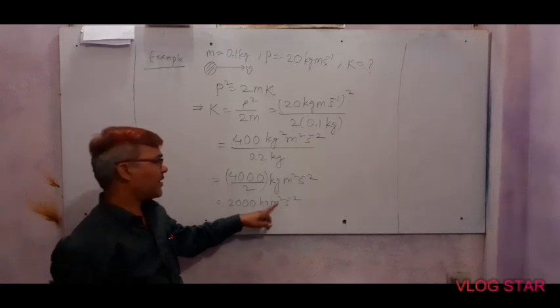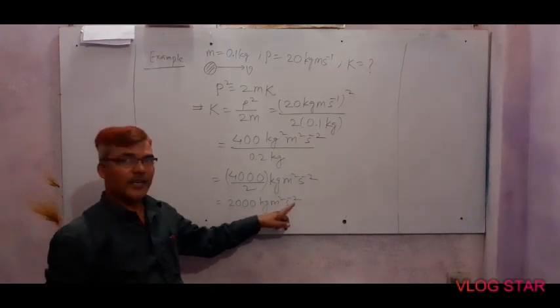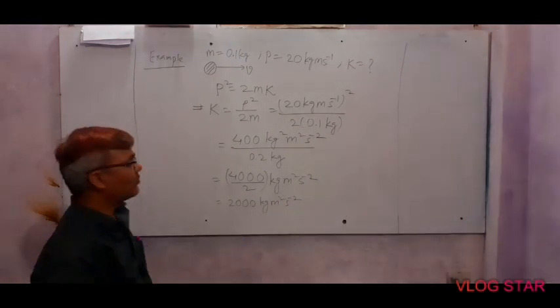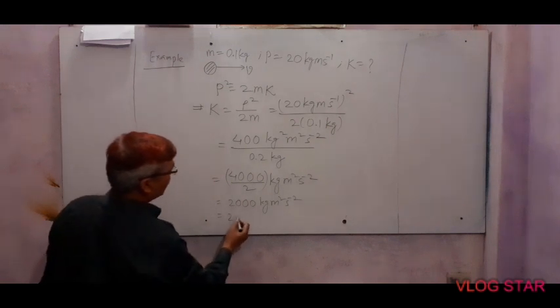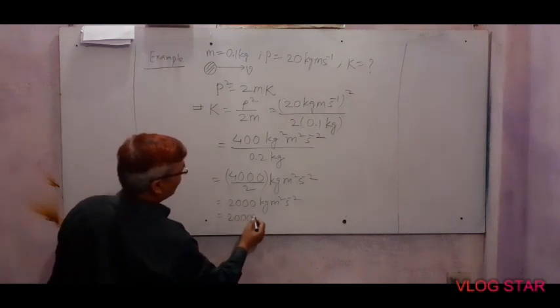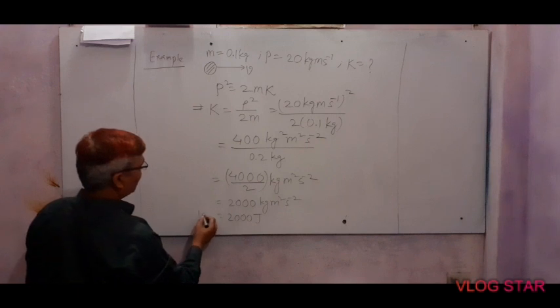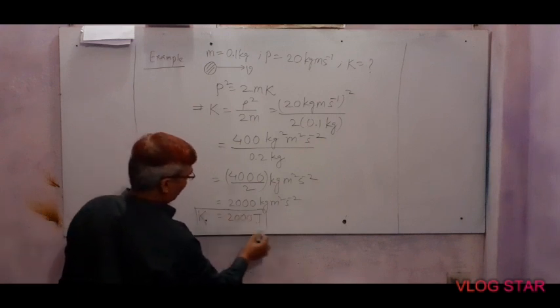And we know that kg meter squared per second squared is the same as the Joule. It means this can be written as 2000 Joules. This is the kinetic energy possessed by the moving object.